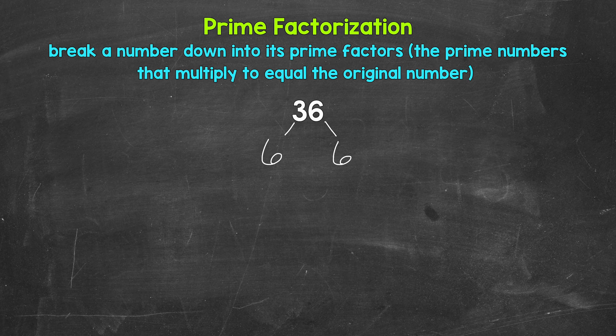So we have 6 and 6. We need to go from here until we only have prime numbers. 6 is a composite number. So we can break these 6s down further.